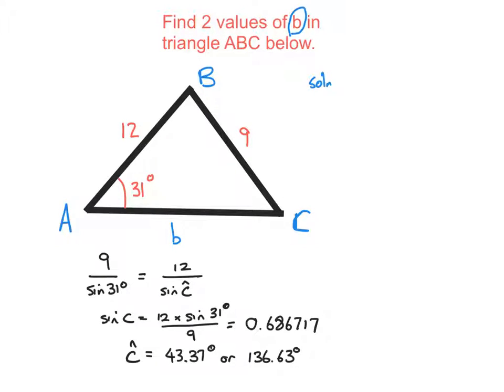Solution one is going to exist. We've got angle A is 31 degrees. Angle C, we've just worked out, is going to be this one, 43.37. And if we add those two up and subtract from 180, we'll get B. That gives me 74.37, which is 105.63. So this is angle B.